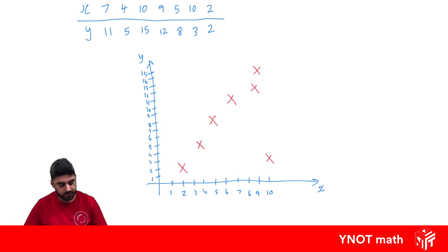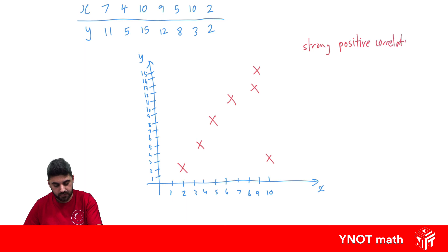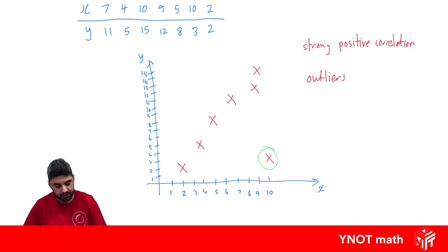And we want to describe the correlation between x and y. It definitely looks like it's positive, and the data fits quite well, so we're going to say this has a strong positive correlation. Are there any outliers? It looks like the point at coordinate 10, 3 is an outlier because it doesn't really belong with the other data. We can see the other data is forming a nice straight line, and this one looks like it doesn't belong.